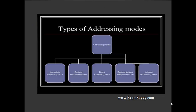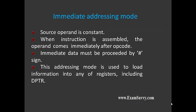The types of addressing modes are 5 modes. The 1st one is immediate addressing mode. The 2nd one is register addressing mode. The 3rd one is direct addressing mode. The 4th one is register indirect addressing mode. The 5th one is indexed addressing mode. We will see these types briefly.